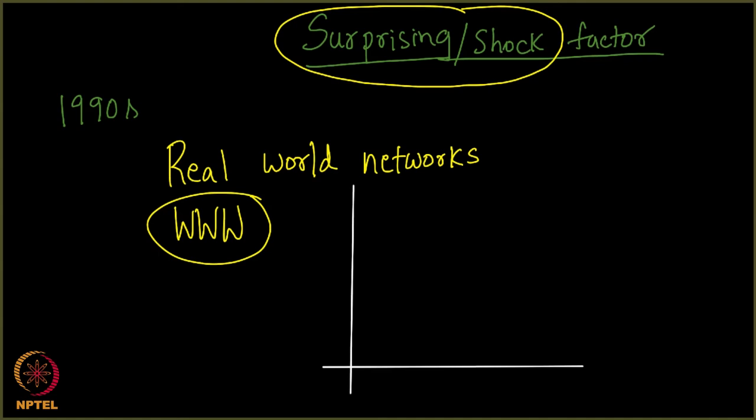There was a surprise shock factor there. They observed that it was no way close to the bell curve. The curve looked something like this. There was a drop. It was not a bell like this, it was a drop like this. So once again, what is the x and y axis? X axis is the degree and y axis is the percentage of nodes that have so much degree. So people observed that there is a drop here. Why is it happening?